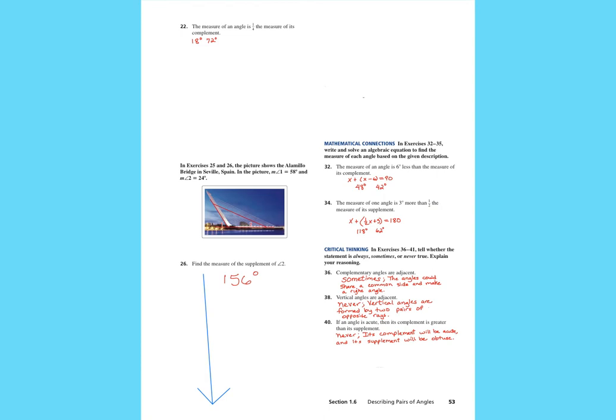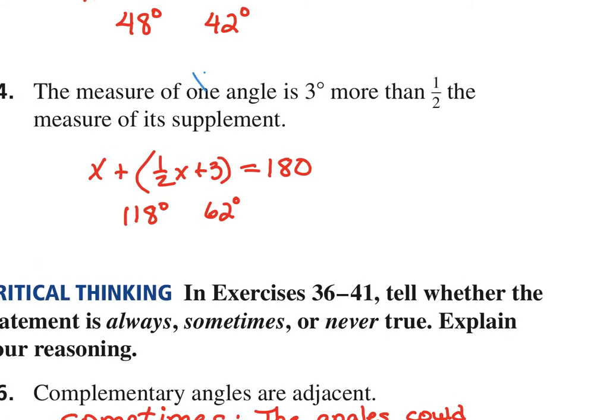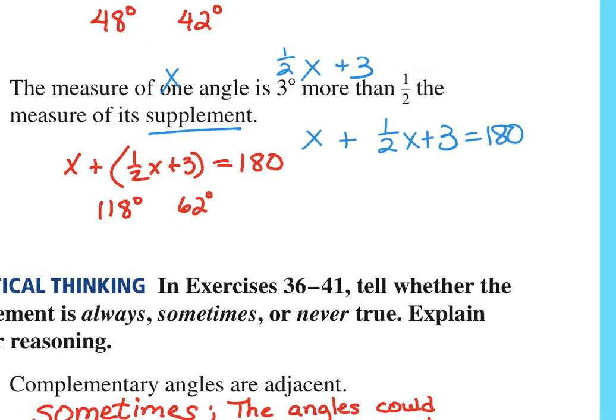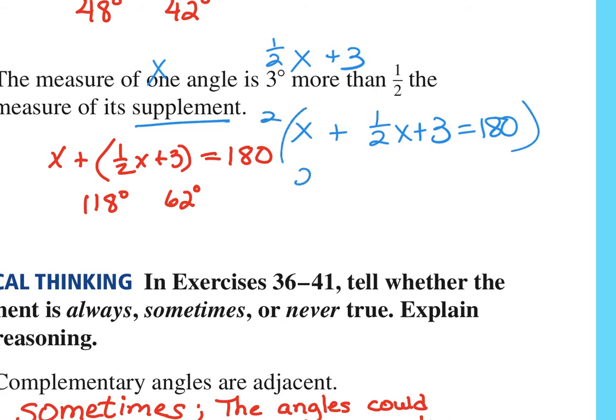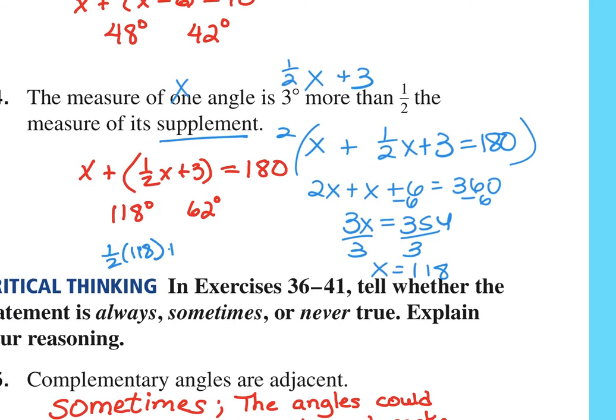Problem 4: The measure of one angle is 3 more than half the measure of its supplement. One angle is X, the other is half of it plus 3: X plus one-half X plus 3 equals 180. Multiplying everything by 2: 2X plus X plus 6 equals 360, so 3X equals 354. Dividing by 3, X equals 118. The other angle is one-half of 118 plus 3, which is 62.